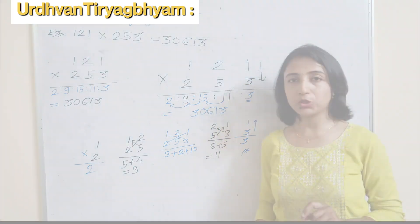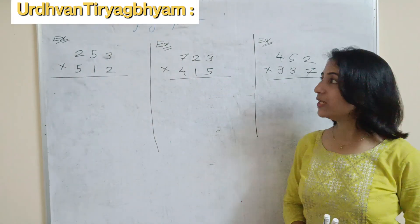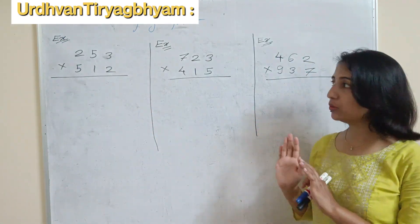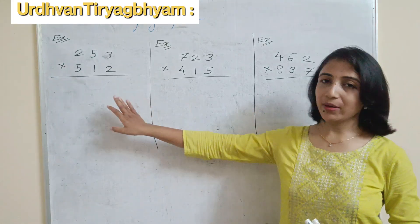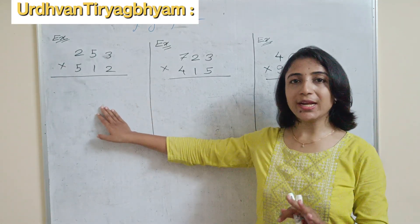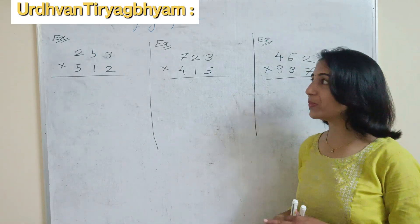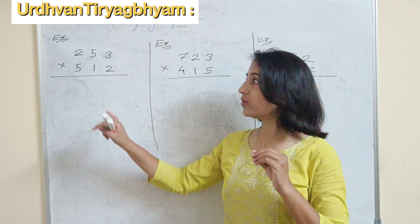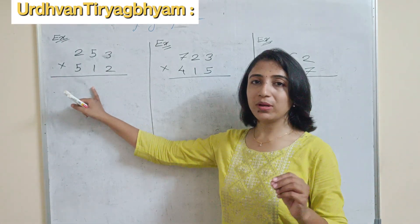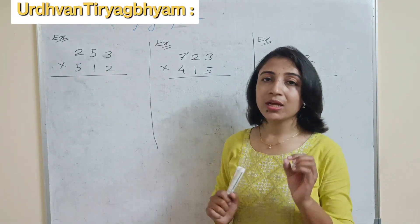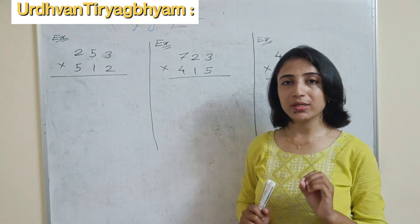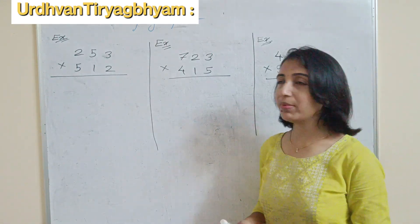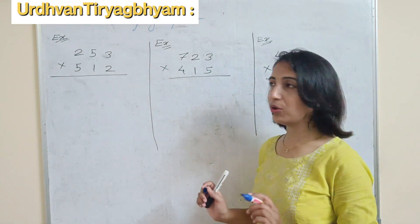We will see how to solve the question directly. Let's look at some more examples to understand this method clearly. This example is a random question, so I don't know the answer in advance. You can try this example by regular multiplication method so that you can understand the importance of this vertical cross method.